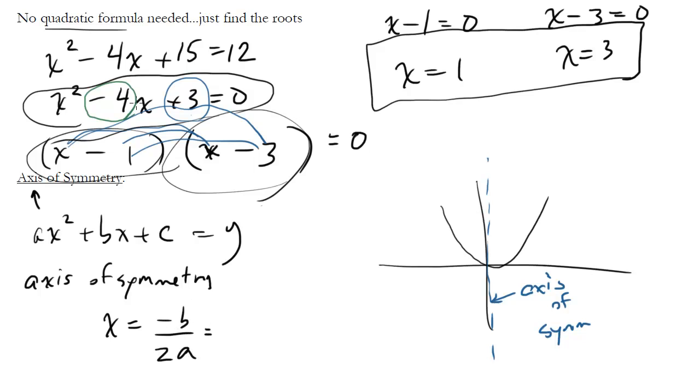So in this example up here, it would be minus minus 4 over 2a. Well, a here is 1, so 2 times 1. So we get 4 over 2, which is 2.